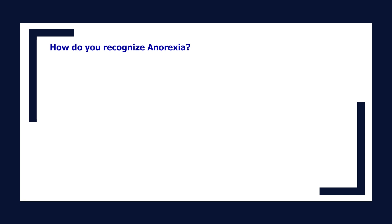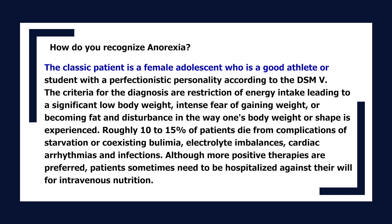How do you recognize anorexia? The classic patient is a female adolescent who is a good athlete or student with a perfectionistic personality. Per DSM-5, the criteria are restriction of energy intake leading to significantly low body weight, intense fear of gaining weight or becoming fat, and disturbance in the way one's body weight or shape is experienced. Roughly 10–15% of patients die from complications of starvation, coexisting bulimia, electrolyte imbalances, cardiac arrhythmias, and infections. Patients sometimes need to be hospitalized against their will for intravenous nutrition.